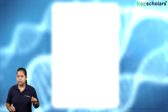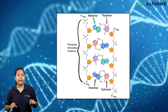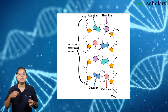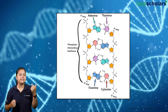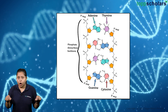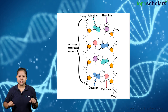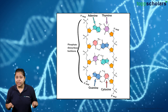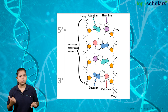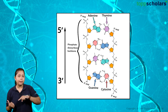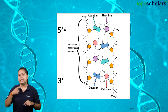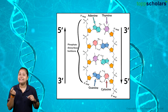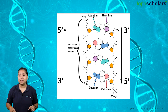Remember, the other strand of this DNA double helix runs in the opposite direction, forming an anti-parallel arrangement to this one. Meaning, if this one goes from 5' to 3', this one will go from 3' to 5'.